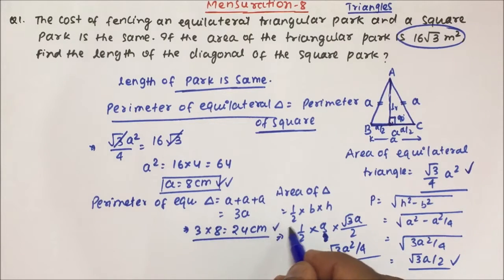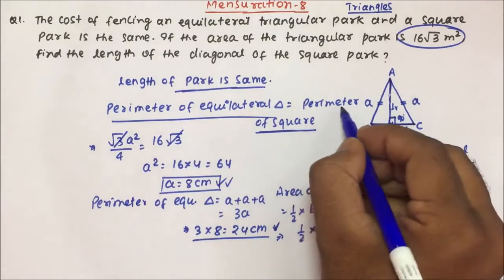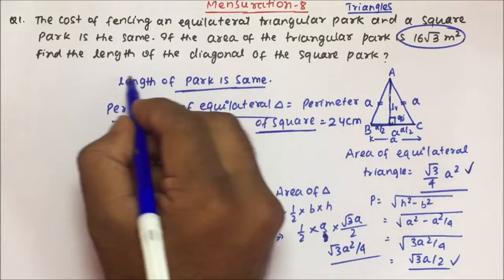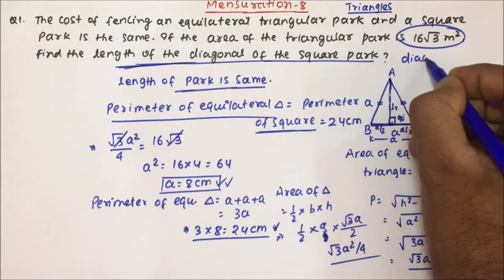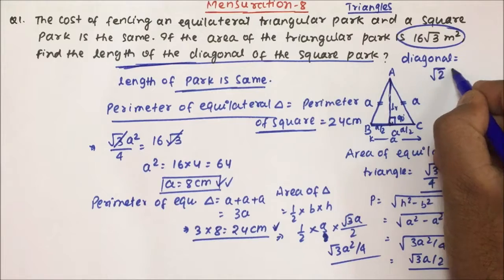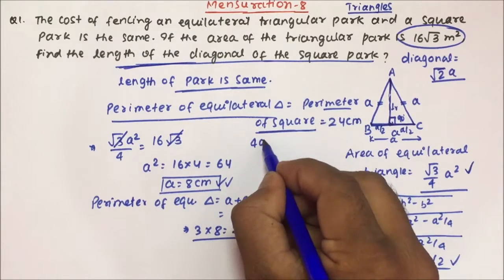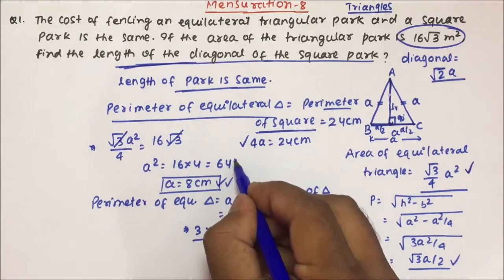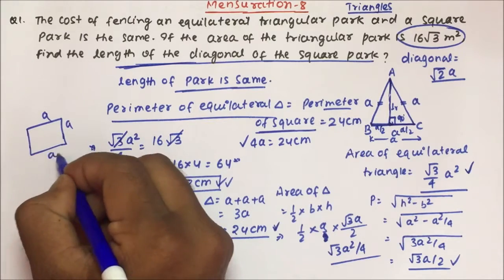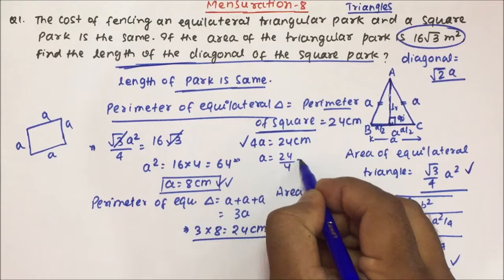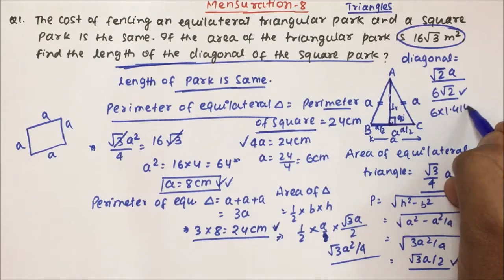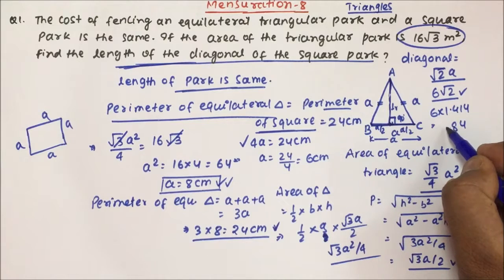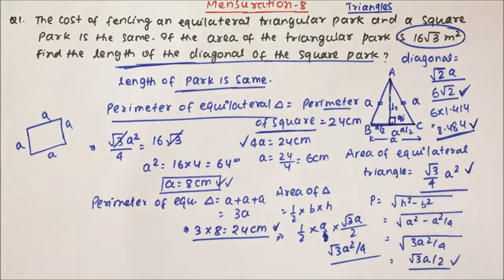From here we got the perimeter of the equilateral triangle, which is equal to the perimeter of the square, which is 24 centimeter. They are asking: find the length of the diagonal of the square park. Diagonal = √2 × a. Perimeter of square = 4a = 24, so a = 6 centimeter. So diagonal = 6√2 = 6 × 1.414 ≈ 8.484 centimeter.